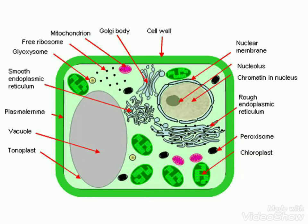You can have a look at this plant cell structure. There is the cell wall, nuclear membrane, nucleolus, chromatin in nucleus, rough ER, peroxisome, chloroplast, tonoplast, vacuole, plasma lemma, smooth ER, glyoxysome, free ribosome, mitochondrion, and Golgi body. Just have a glance — you'll learn about these terms more as we go on.